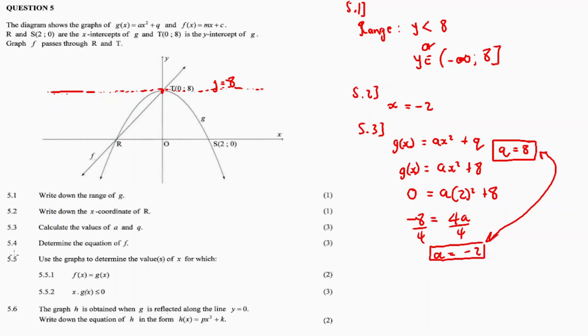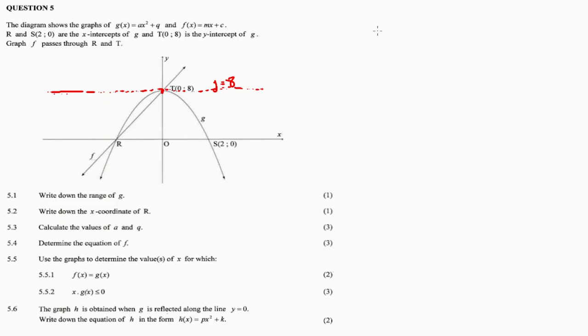5.4: Determine the equation of f. F is a straight line. F of x is equal to mx + c. The c represents or gives us the y-intercept, so c is also equal to 8. So this is f of x = mx + 8. Now we need to find the value of m, so substitute a point.